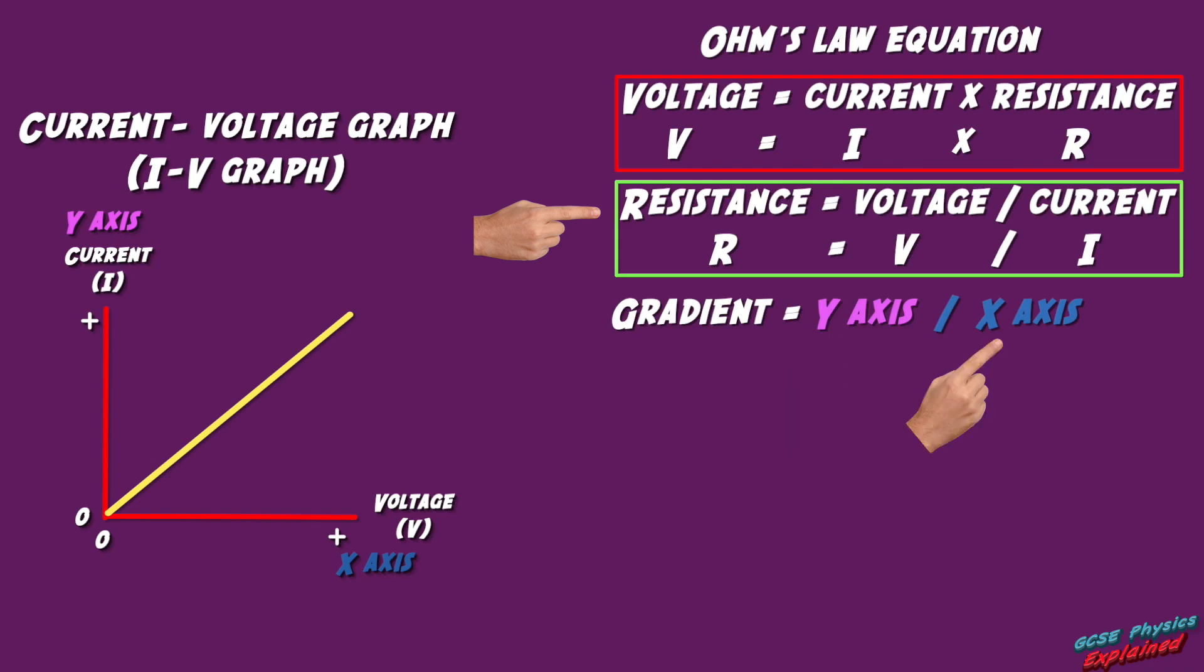So in the case of a current voltage graph, that means the gradient is current divided by voltage, which is the opposite of voltage divided by current, which was the equation to calculate resistance that I just told you to remember.